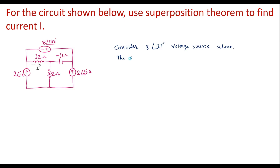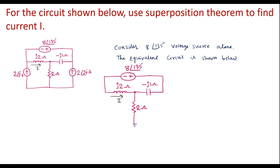The equivalent circuit is shown below. So now let me draw the equivalent circuit. Considering the 8 volt voltage source alone, the current sources are open circuited. When we open circuit these 2 current sources, they are removed and we get only a 2 ohm resistor here. As we see that no current flows here as it is open, so no current flows in the 2 ohm resistor and the entire current flows only in this loop. Now I will assume that the current in this loop is flowing in this direction and I will call it as x.